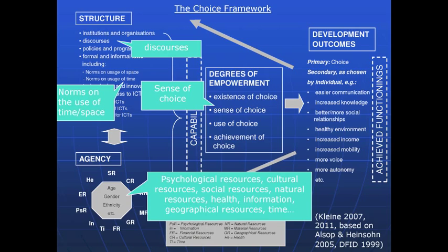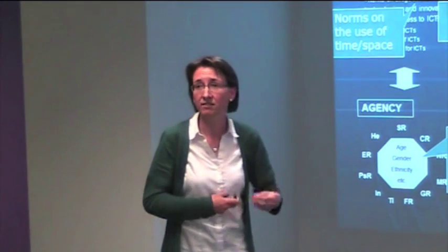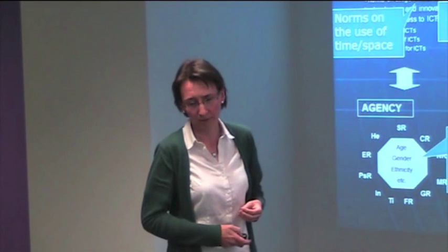These are some elements that came directly from fieldwork, basically emerging. The framework developed over three rounds of ethnographic fieldwork. All of this is embedded in an approach of grounded theory, where particular aspects — sense of choice and norms on the use of time and space — emerged from the fieldwork.